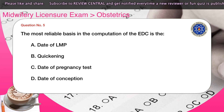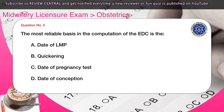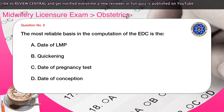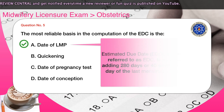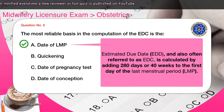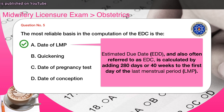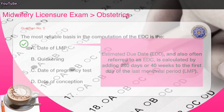The correct answer is A. Estimated due date (EDD), also often referred to as EDC, is calculated by adding 280 days or 40 weeks to the first day of the last menstrual period (LMP).